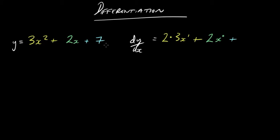You might be wondering what happens to a constant. 7 really is actually 7x to the 0, because x to the 0, or anything to the power of 0, is 1, so 7 times 1.